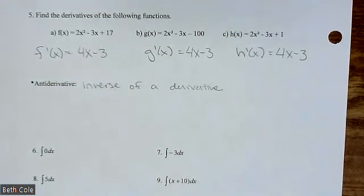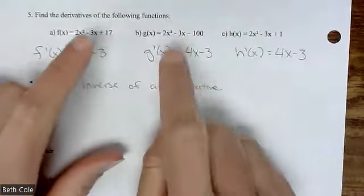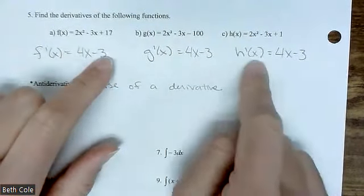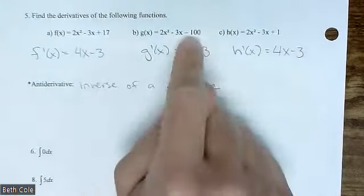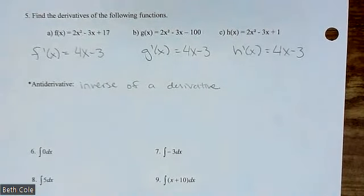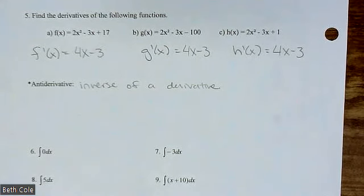But here's the thing. When you go backwards, there might be a constant added on to the end. Do you get how the derivatives of each of these were all the same, but the original functions are not the same? You could have plus or minus literally any number in the world that's a constant. So when you do antiderivatives, you have to put plus c at the end, c for constant.